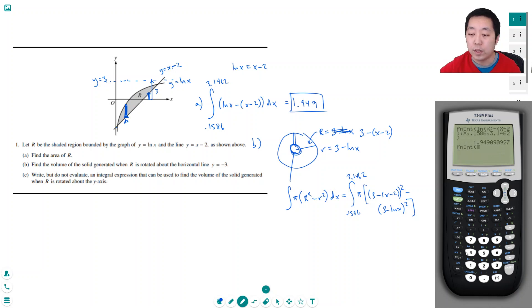And I'm going to integrate over the same region, 0.1586 to 3.1462. We're going to use our calculator again. So I'm going to do pi times (3 minus (x minus 2)) squared. Note that I put a lot of parentheses because I want to make sure I do the order of operations correctly, minus (3 minus natural log of x) squared. Integrate over x from 0.1586 all the way to 3.1462.